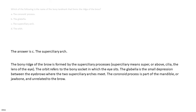The answer is C, the superciliary arch. The bony ridge of the brow is formed by the superciliary processes. Superciliary means super, or above, cilia — the lens of the eye. The orbit refers to the bony socket in which the eye sits. The globella is the small depression between the eyebrows where the two superciliary arches meet. The coronoid process is part of the mandible, or jawbone, and unrelated to the brow.